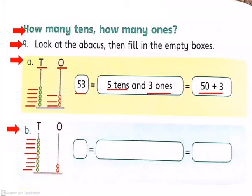Now count ones. 1, 2. 8 tens means 80 plus 2. It will be 82. So we will write here 82. Now we will write in next box, we will write 8 tens and 2 ones. In the last box we will write 80 plus 2.